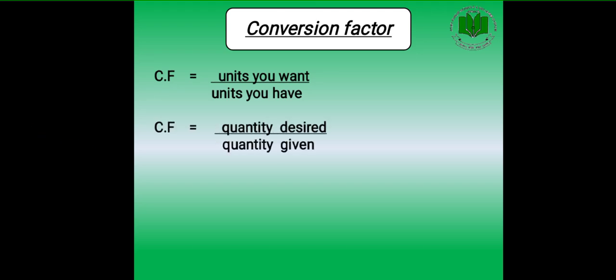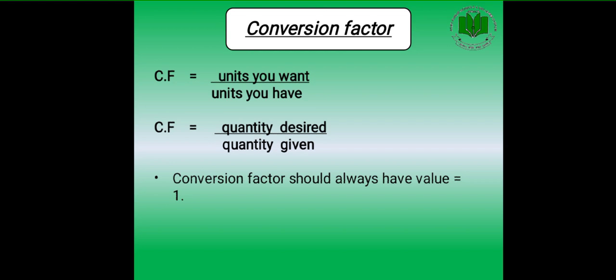It can also be taken as the quantity desired divided by quantity given — so the quantity which you want goes in the numerator and the quantity which you have goes in the denominator. Now, Conversion Factor should always have a value equal to 1. You need to remember this. These are small but important points, and we are going to discuss their application in the upcoming examples.